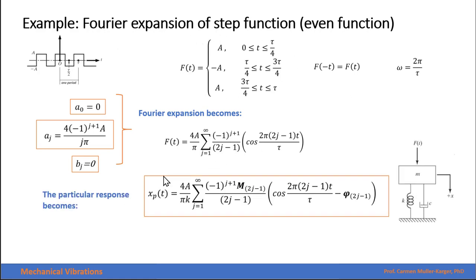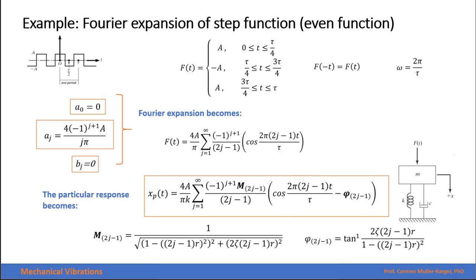Including these coefficients in the Fourier expansion gives the expression for the original even function. The response of the system is then found using the same approach: the amplitude divided by the spring constant times the magnification factor for each frequency, with cosine of that frequency minus a phase angle. The magnification factor and phase angle expressions are written in terms of the corresponding frequency ratios.